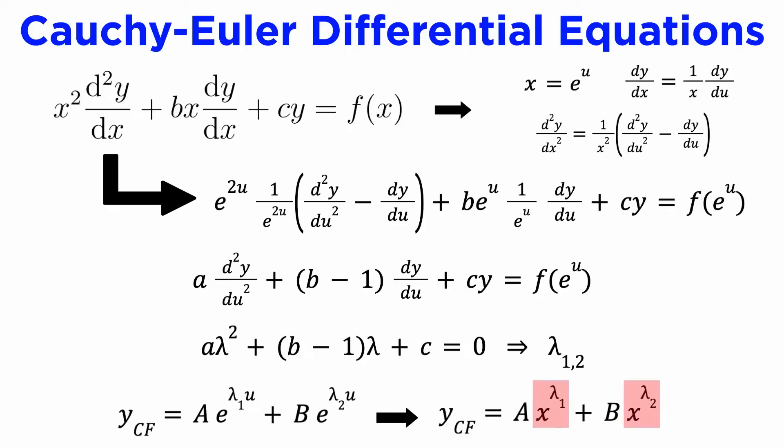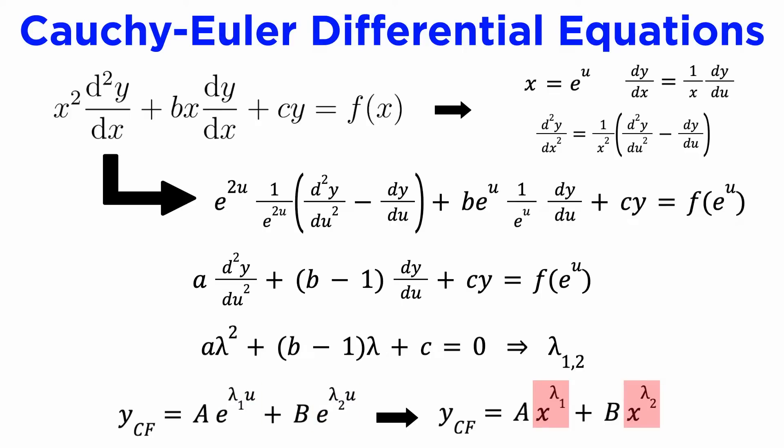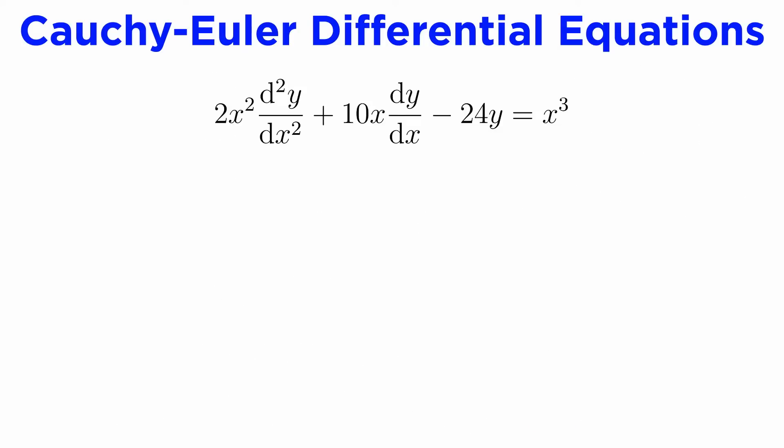We will find that the complementary solution often contains terms of the form x to the lambda, where lambda is a root of the transformed characteristic equation, because the usual form of e to the lambda u, once u is unsubstituted, results in the exponential and the logarithm cancelling out. Let's see an example.